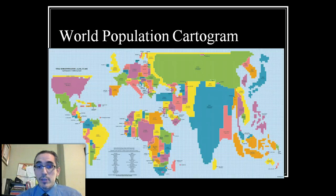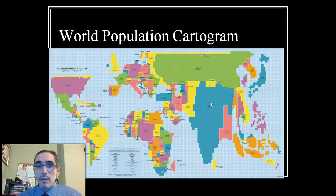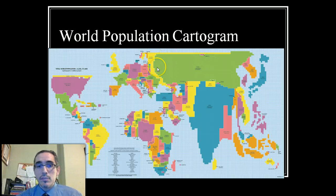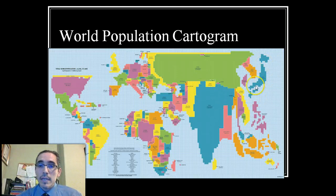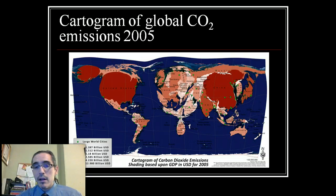This world population cartogram is particularly popular because it really gives you a sense of where most of humanity is — the size of countries is controlled by the size of their populations. China and India are enormous, while Russia, the largest country on Earth physically, is pushed to the margins because population-wise it's tiny. Countries like Japan, although an island and relatively small, loom large because of the large population there. A cartogram of global carbon dioxide emissions showed debates about climate change legislation and who bore most responsibility.